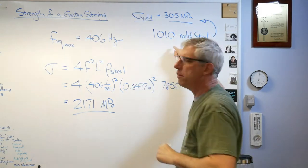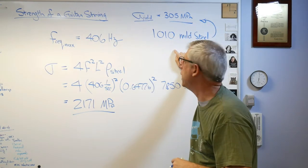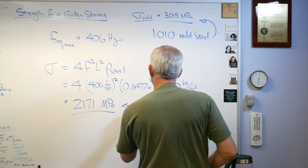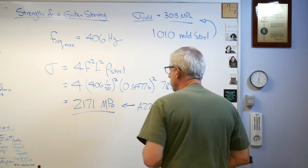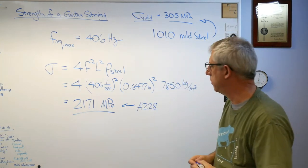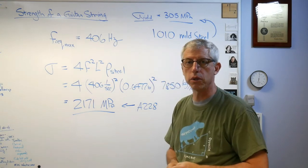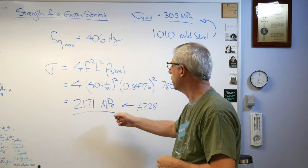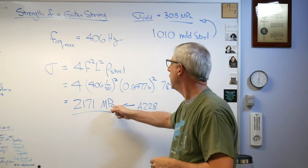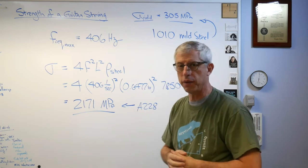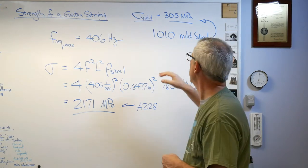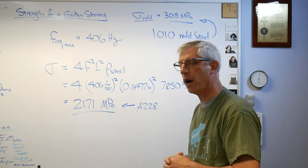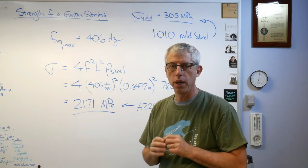That's a brittle failure. In order to get strengths that high, you have to live with a relatively brittle material. If this was 1010 steel, mild steel, that would stretch out like taffy candy. It just stretches forever. This stuff is called A228, it's called music wire. It's treated so that it has an extremely high yield strength, ultimate strength really. They're almost the same in this case.